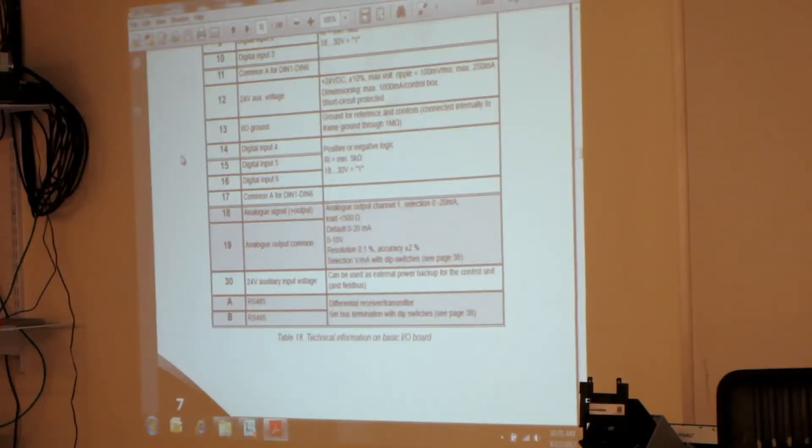And the digital inputs, you can configure them. For instance, they come pre-configured. So digital input number three is a motor failure, an external alarm. You hit that switch and it locks it up or stops it and gives you an alarm signal. Digital input number six is preset as reset. So when you hit that button, it resets the faults.